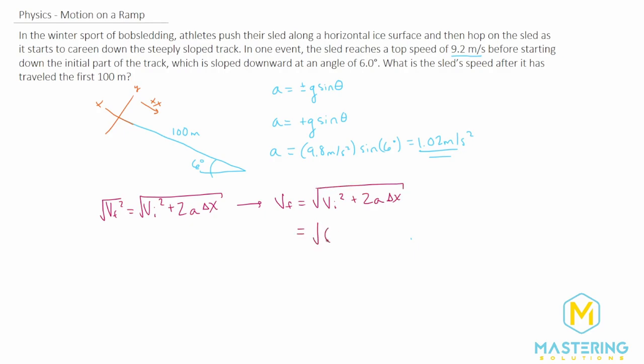The initial velocity is 9.2 meters per second. We'll square that and add 2 times the acceleration, which we found is 1.02 meters per second squared, times the distance of 100 meters.